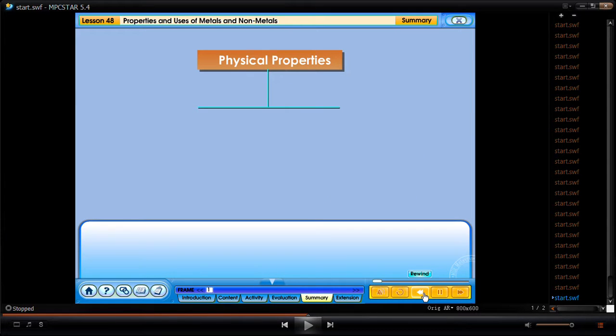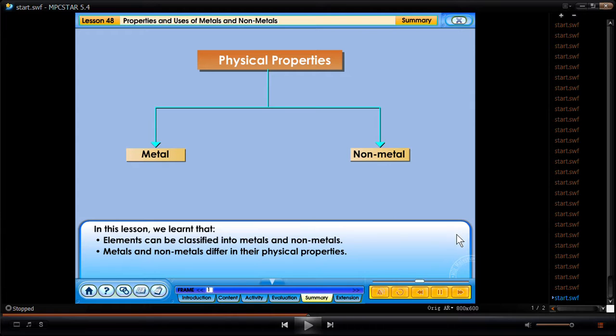In this lesson, we learnt that elements can be classified into metals and non-metals. Metals and non-metals differ in their physical properties. Due to the difference in physical properties, metals and non-metals are used differently in daily life.